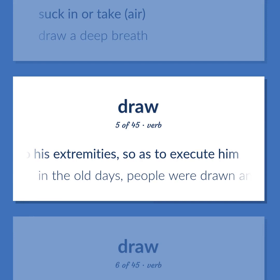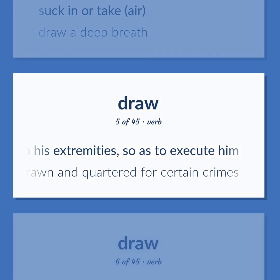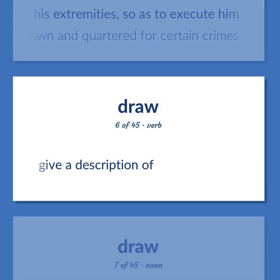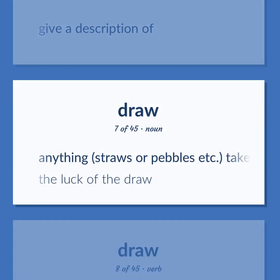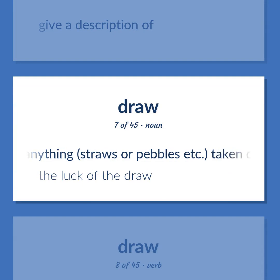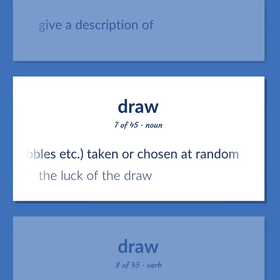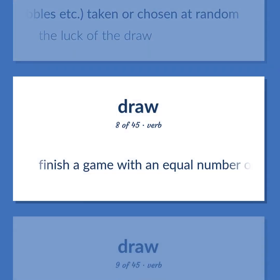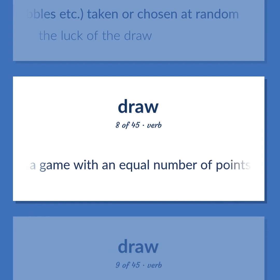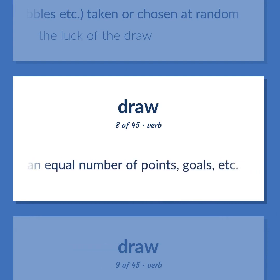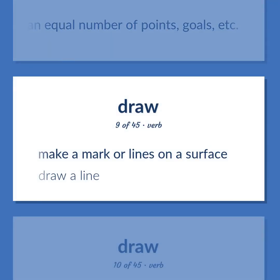Draw: to give a description of. Also, anything — straws or pebbles, etc. — taken or chosen at random — 'The luck of the draw.' Also, to finish a game with an equal number of points, goals, etc. Also, to make a mark or lines on a surface — 'Draw a line.' Also, to get or derive. Also, to pass over, across, or through.